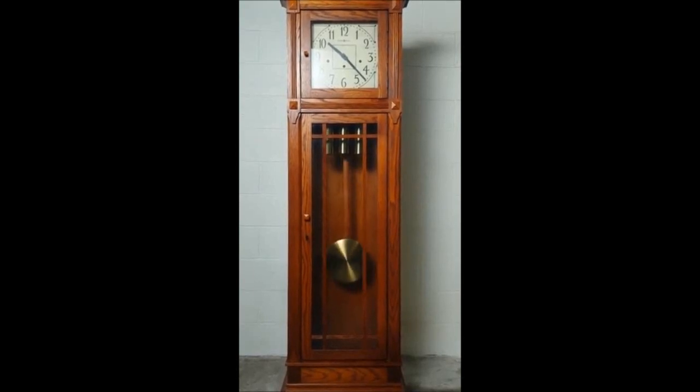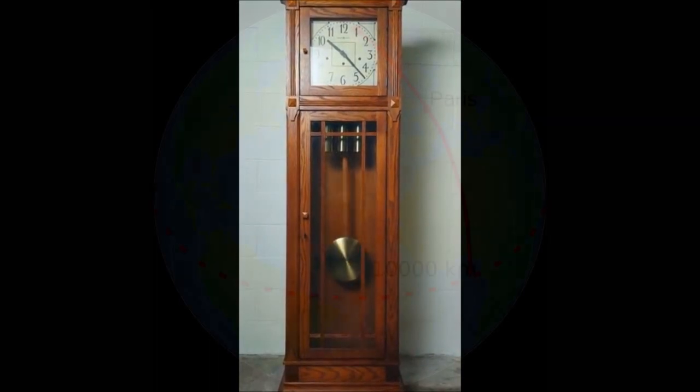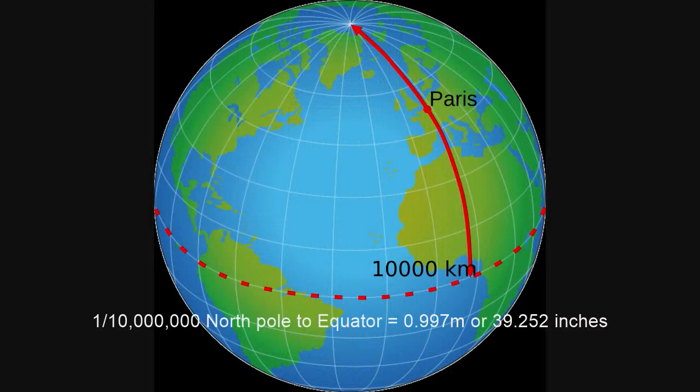Originally, the meter was defined as the length of a one-second pendulum, which we can see in grandfather clocks. The next way to define it was to divide the distance from the North Pole to the equator by 10 million.